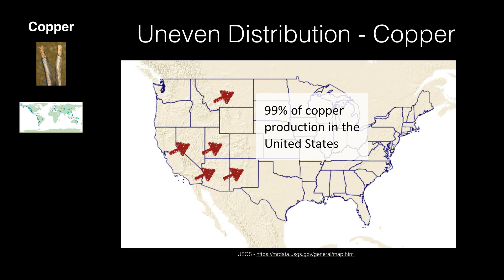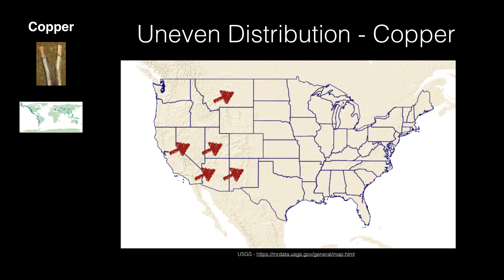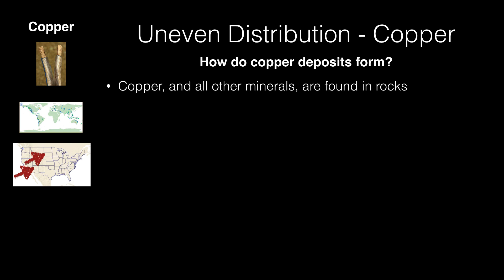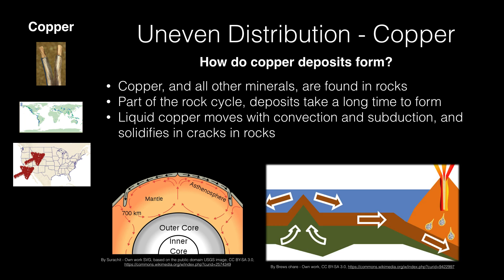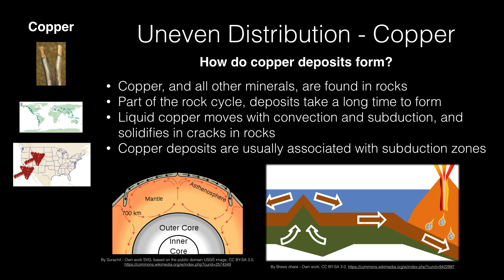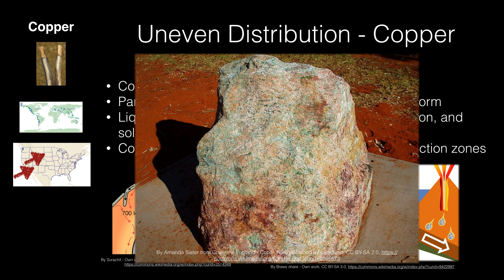But why is copper found in some places and not others? It turns out this has to do with how copper deposits form. Copper and all other minerals are found in rocks, so they are part of the rock cycle, and deposits take a long time to form. Liquid copper moves with convection and subduction and solidifies in the cracks in already solid rocks. Copper deposits are usually associated with subduction zones. As magma continues to solidify into igneous rock, fluid rich in copper moves into the cracks, eventually solidifying as well. Uplift, weathering, and erosion then expose the copper deposits — you can see in this rock that a lot of it is green, which is the copper solidified in the cracks.